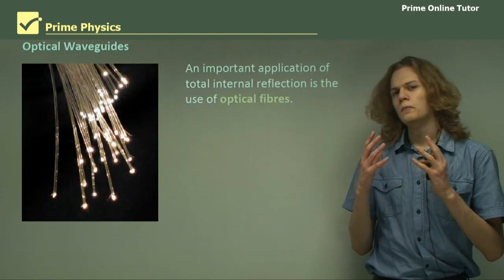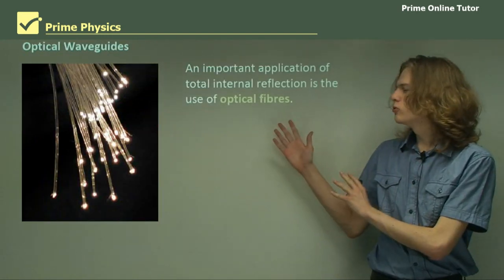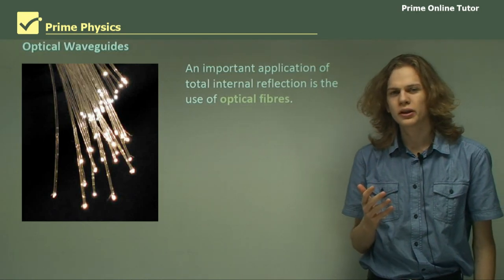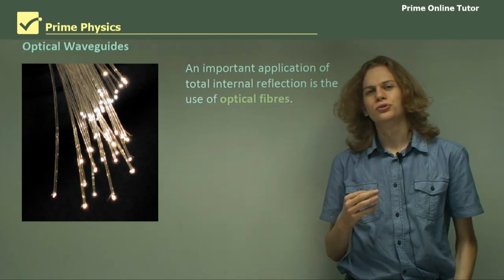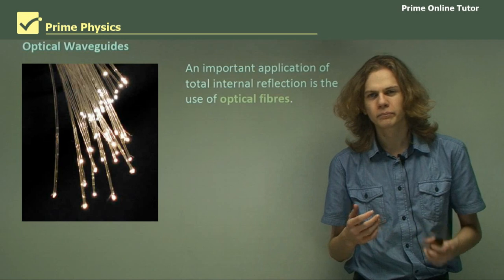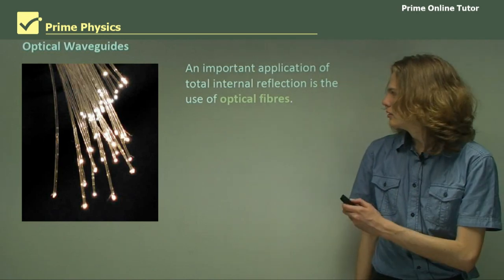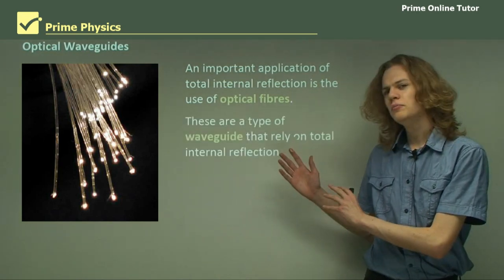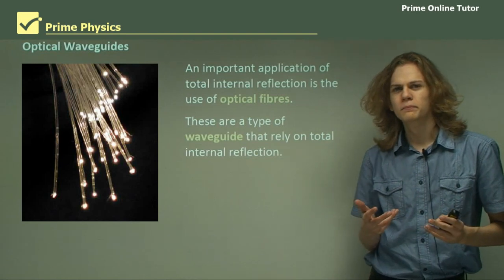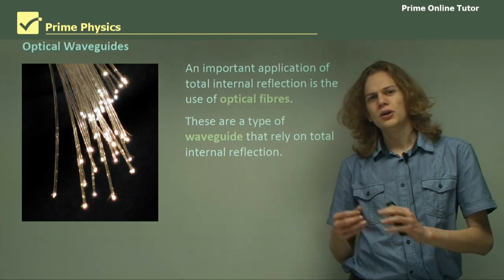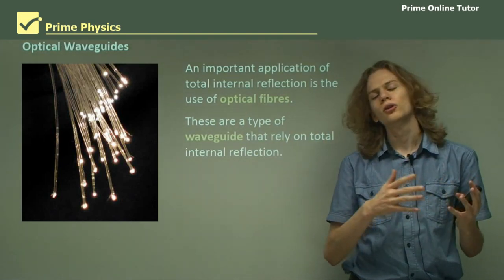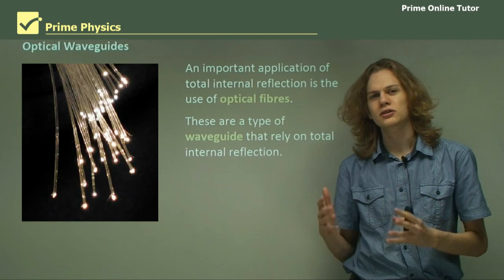Now optical fibers are probably the most important use of total internal reflection in our world today. So they can be used as a sort of waveguide. I mean we have a very, very long pipe within which total internal reflection is occurring.